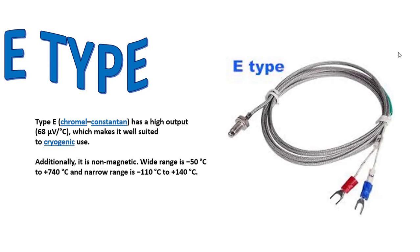Type E has high output of 68 µV per °C, which makes it well suited to cryogenic use. Additionally, it is non-magnetic with a wide range of -50°C to +740°C and narrow range of -110°C to +140°C.